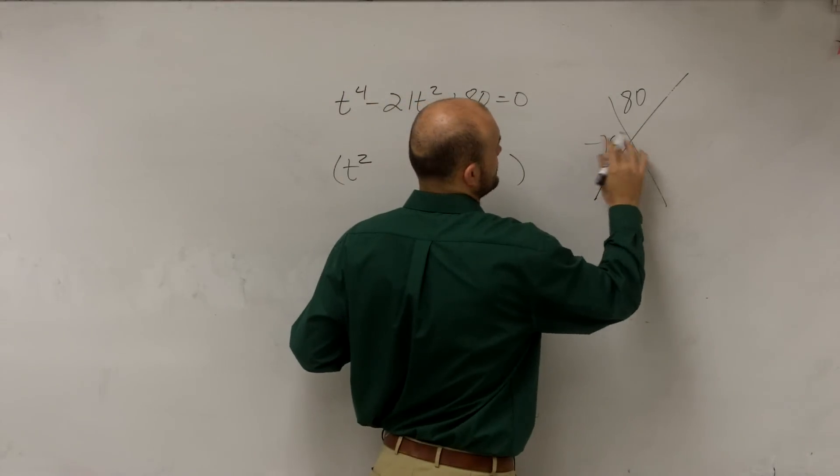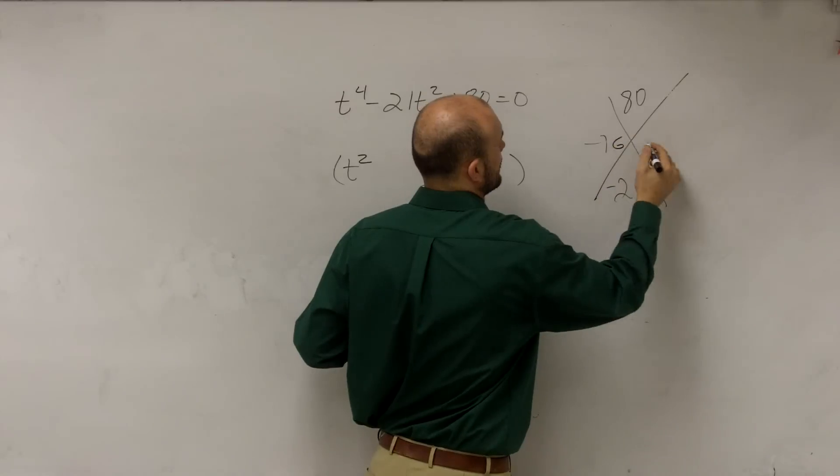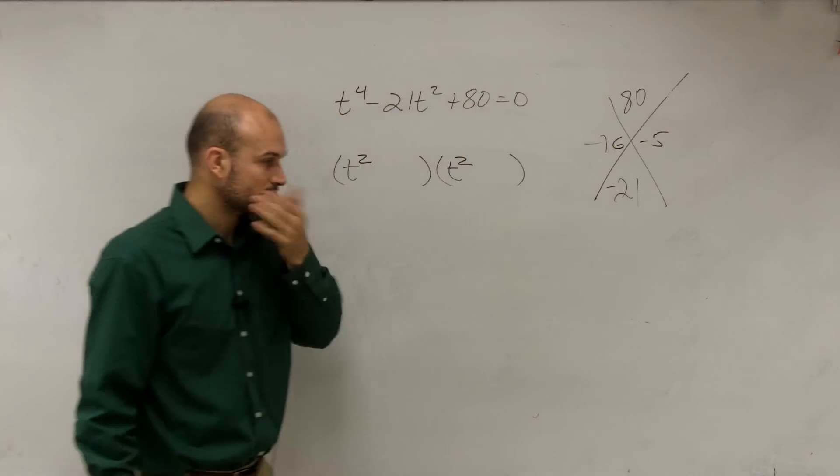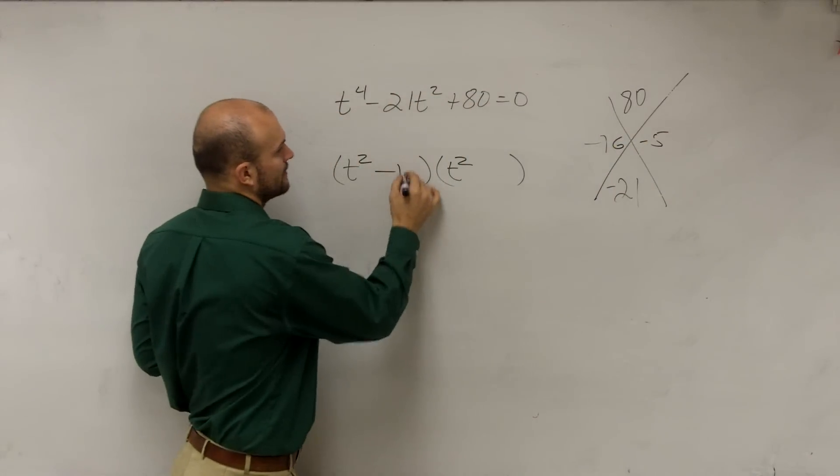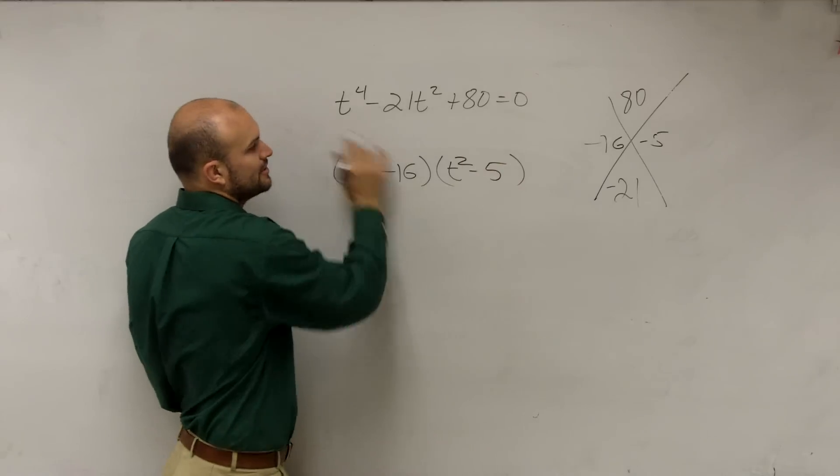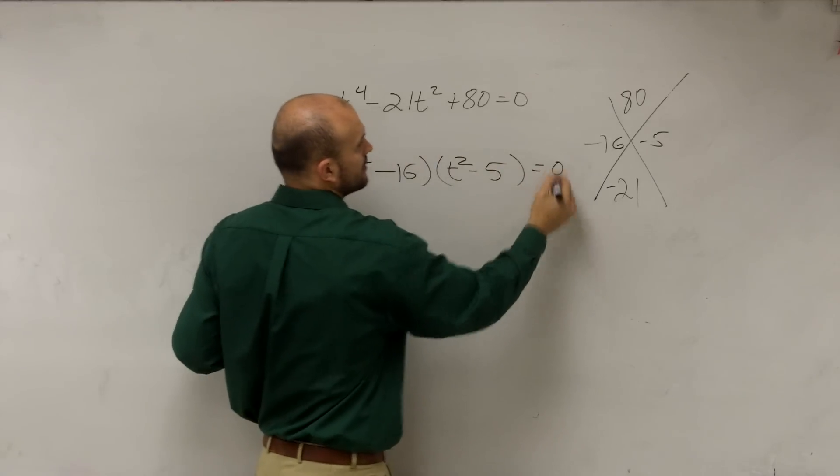So we say negative 16 and negative 5 work. So we write those in there. Since our a is equal to 0, we can write them in there. Equal to 0.